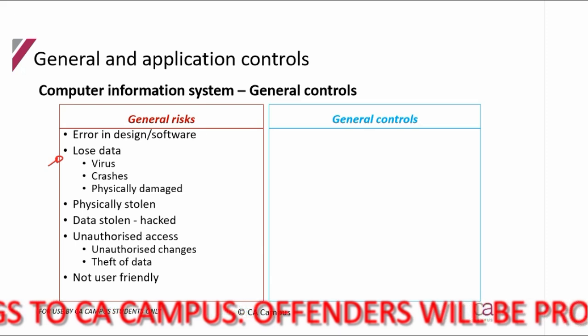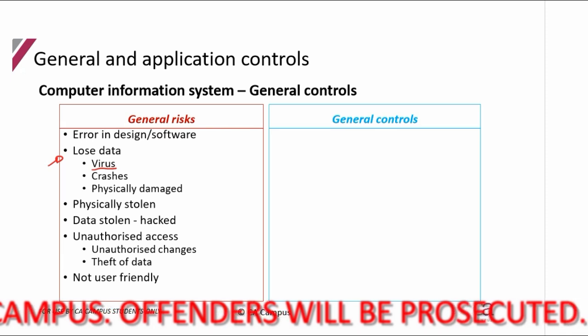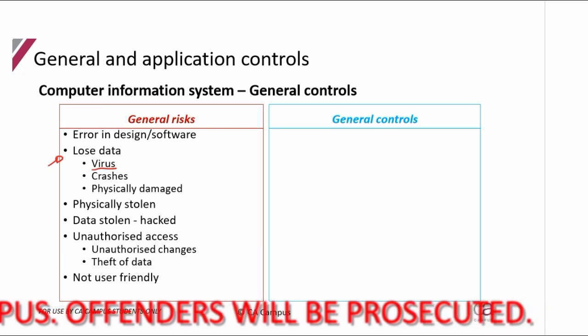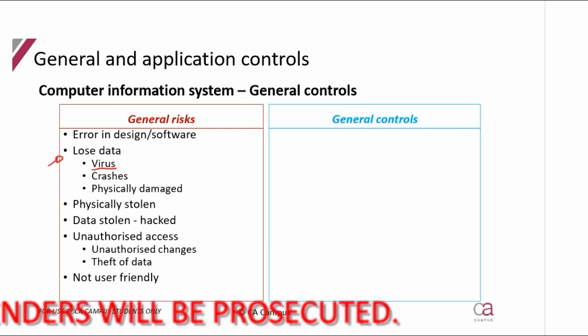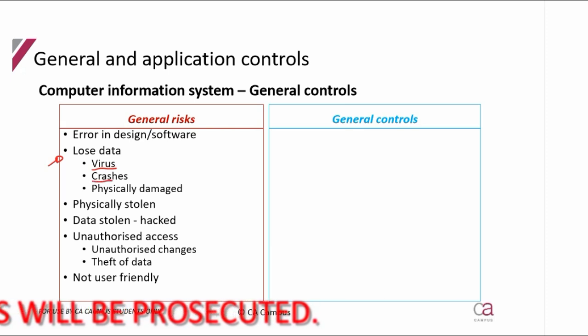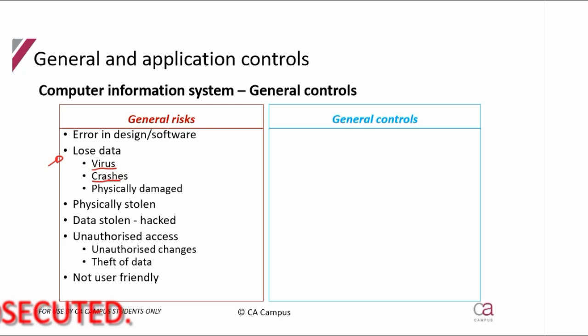If you get a virus from looking at an online site you shouldn't have been looking at, or if it just crashes — you know how these cell phones just one day don't switch on — you could lose all your data. Or you try to transfer data to another phone and all of a sudden it's gone. Another risk is it could get stolen.